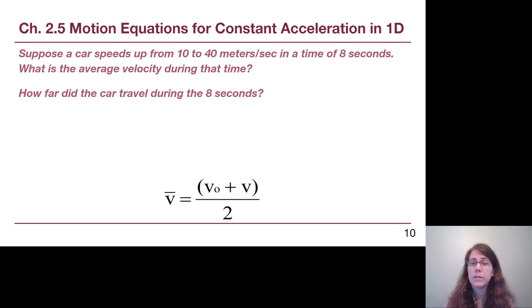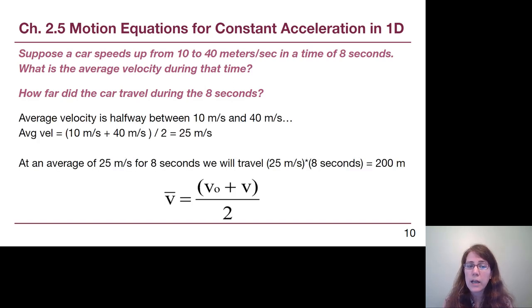Suppose a car speeds up from 10 meters per second to 40 meters per second in a time of 8 seconds. What is the average velocity during that time? Built in here is the idea that it is speeding up at a constant acceleration. And so what that means is we can use our new ingredient. 10 plus 40 is 50, divided by 2 is 25 meters per second. We haven't used that 8 seconds yet, but now if we look at that second question, how far did the car travel during the 8 seconds, that allows us to actually use our previous understanding of average velocity from the first half of Chapter 2. If we are moving at 25 meters per second for 8 seconds, we will travel 200 meters.